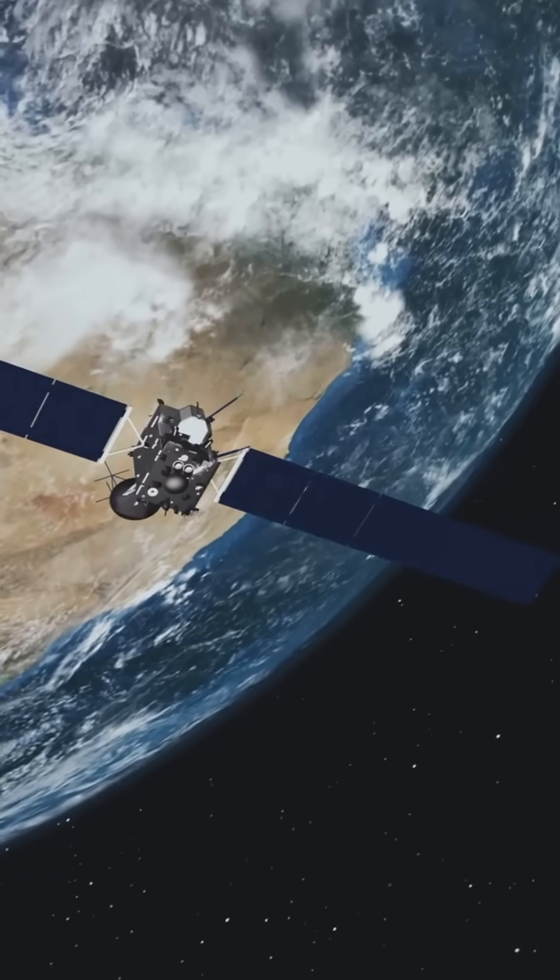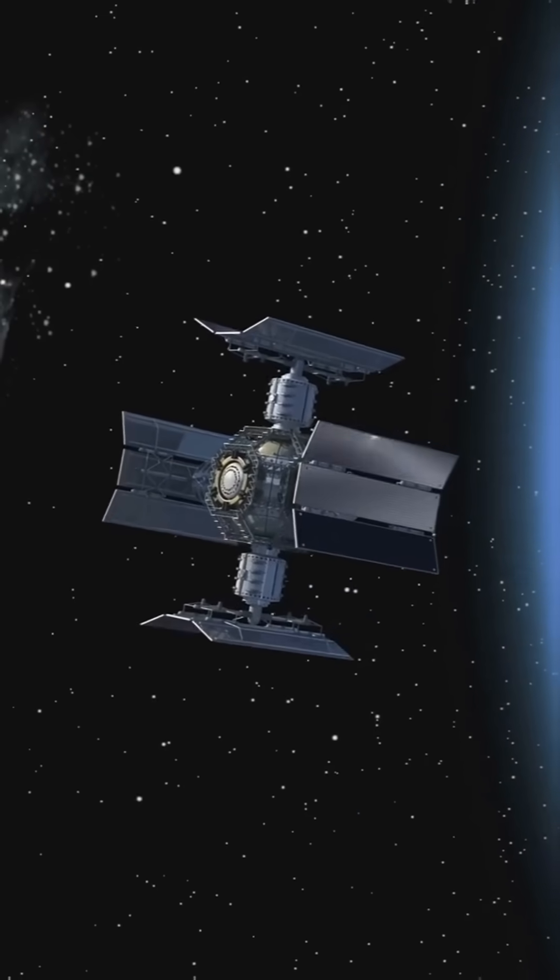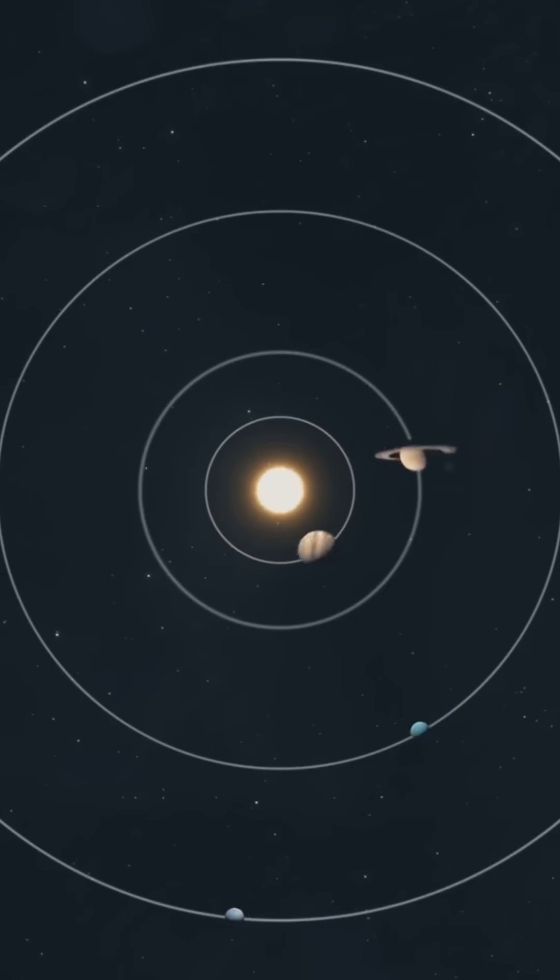Perigee is the closest point to Earth in that same orbit. It's where gravity pulls the satellite hardest, increasing its speed. For low-Earth orbit satellites, perigee might be as low as 200 to 2,000 kilometers.